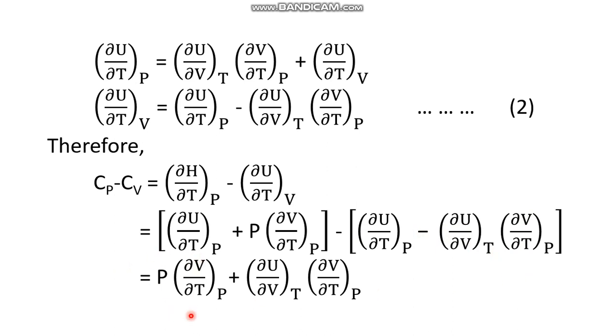The two terms remaining here are P times del V del T at constant P, plus this minus and this minus becomes plus—plus del U by del V at constant T times del V by del T at constant P. So this is the expression of Cp minus Cv. In your exam, sometimes this expression also comes to prove.